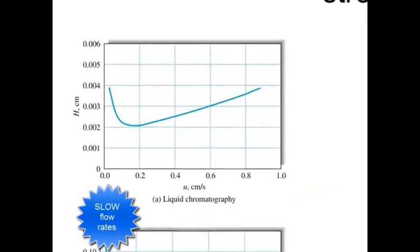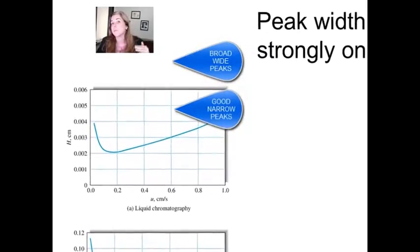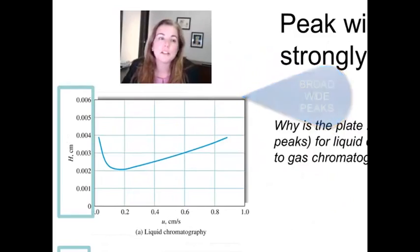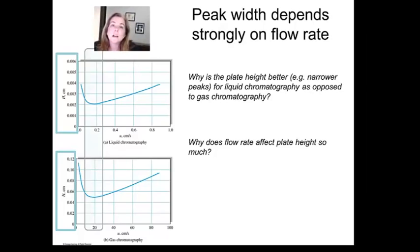In these two examples here, you'll notice we're plotting as a function of flow rate, we're actually plotting the plate height. And just to remind you, to get really good narrow peaks, we want a small plate height. There's a couple of observations. First of all, why is it that liquid chromatography has such a better plate height than gas? The other thing you'll notice is a really strong dependence on flow rate. If you go too fast, you get broader peaks. If you go too slow, you get broader peaks. But there's a minimum, an optimal flow rate.